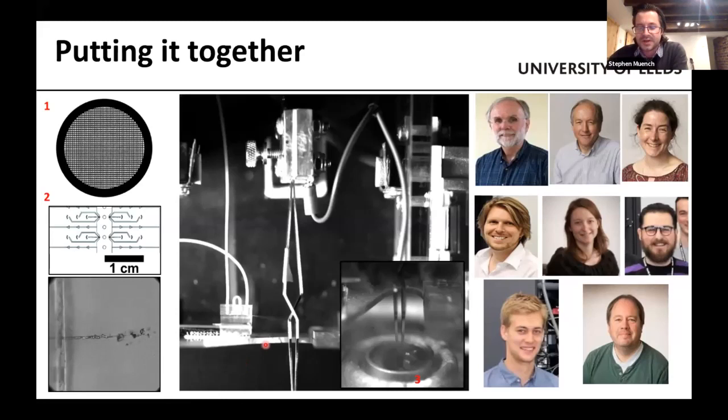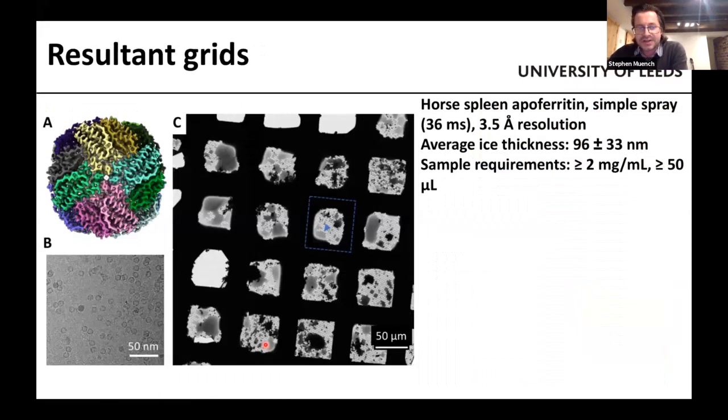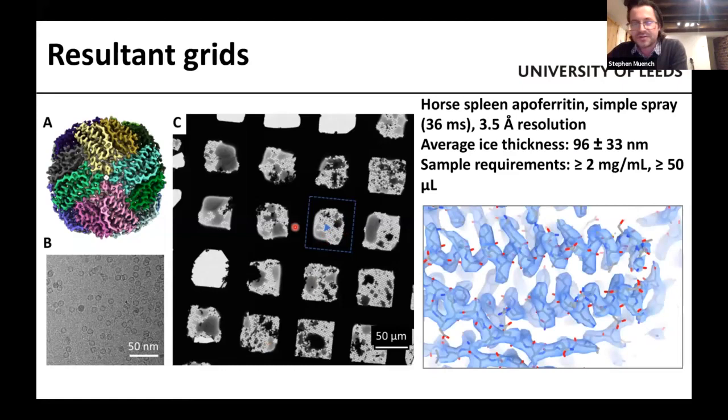And the biggest problem has been making the spray suitable. So what do these grids look like? They don't look as pretty as you'd expect. If you do your EM, they're not great, but they're suitable for what we need. And we can do plenty of apoferritin grids, get around 3.5 angstroms. The record at the moment is three angstroms resolution on a virus sample. But we're not here to make beautiful EM grids. We're here to trap different intermediates. If you want perfect grids, you've got the Vitrobot, the Chameleon, the Vitrojet, other systems are available to you.